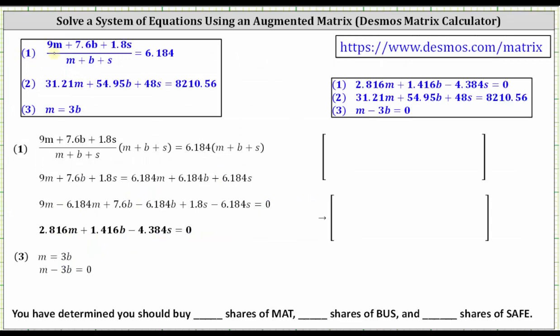Going to the next slide, let's work with writing equation 1 in standard form. For the first step, we need to clear the fraction or clear the denominator of M + B + S by multiplying both sides of the equation by M + B + S. Notice on the left side of the equation, multiplying M + B + S simplifies out. On the right side, we have to distribute 6.184, giving us 6.184M + 6.184B + 6.184S.